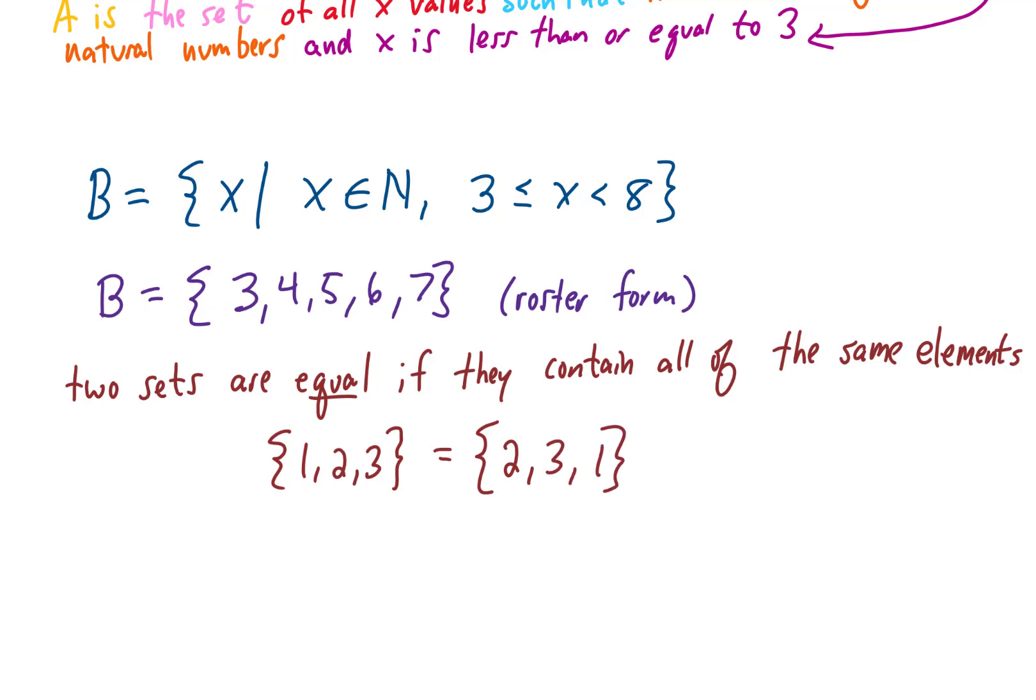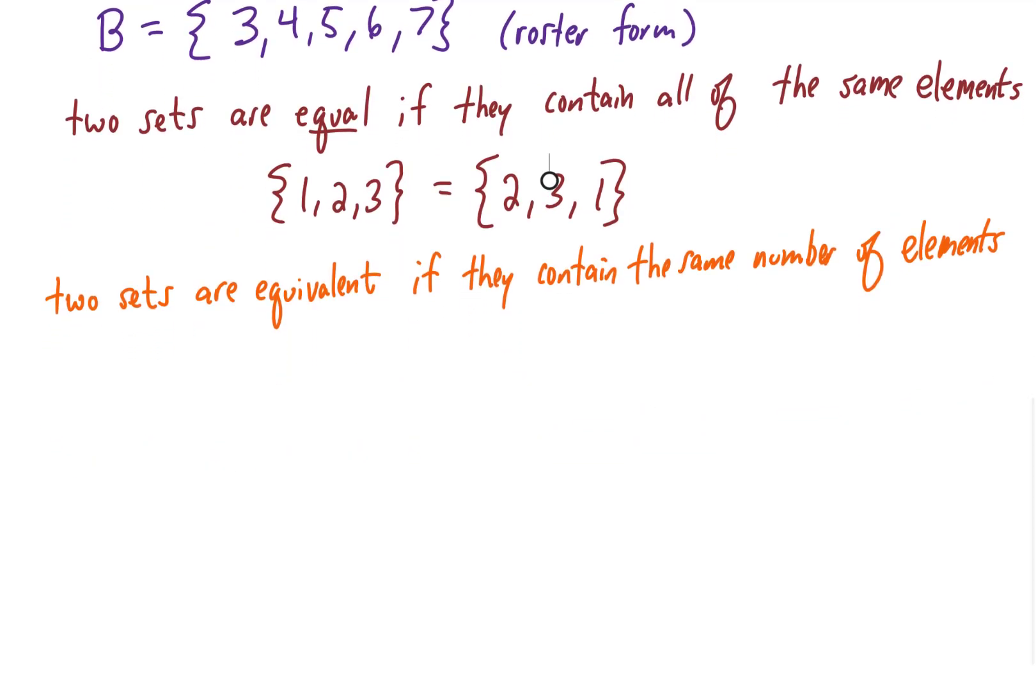Two sets are said to be equivalent if they contain the same number of elements. For example, if you have a set S with the elements Sarah, Soccer, Sunny, and Sandwich, and another set C with the elements Casey, Cat, Cool, and Cucumber, both of these sets have four elements, so these two sets are equivalent.